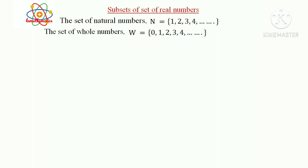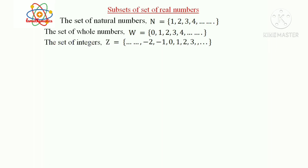Next, the set of integers Z = {..., -2, -1, 0, 1, 2, 3, ...}.